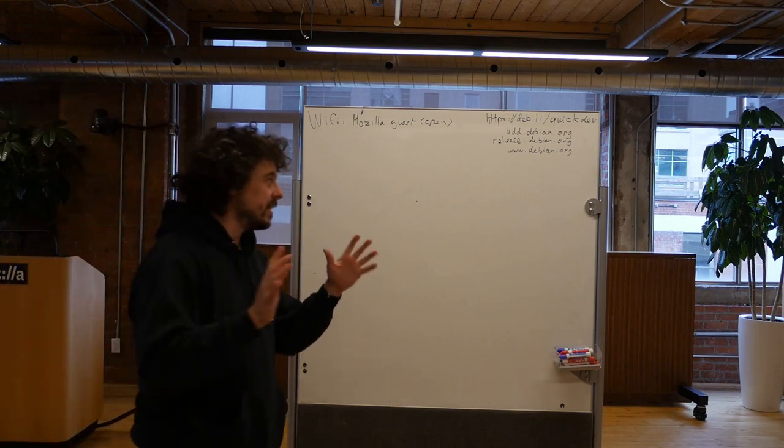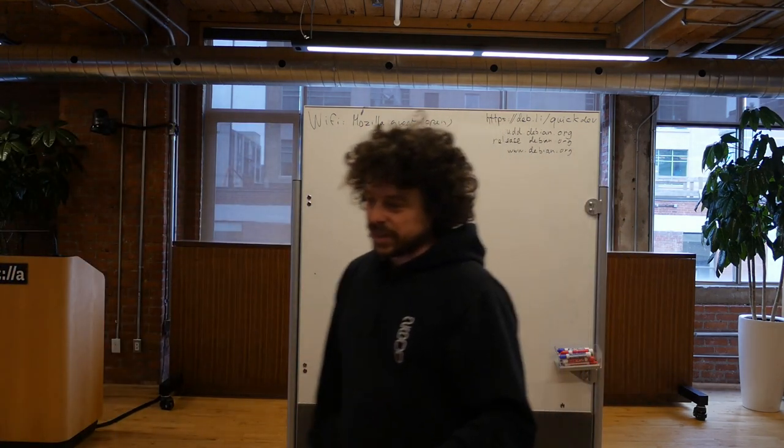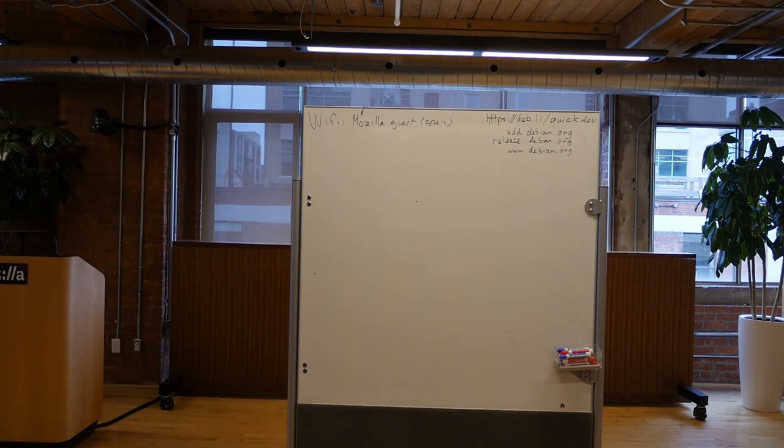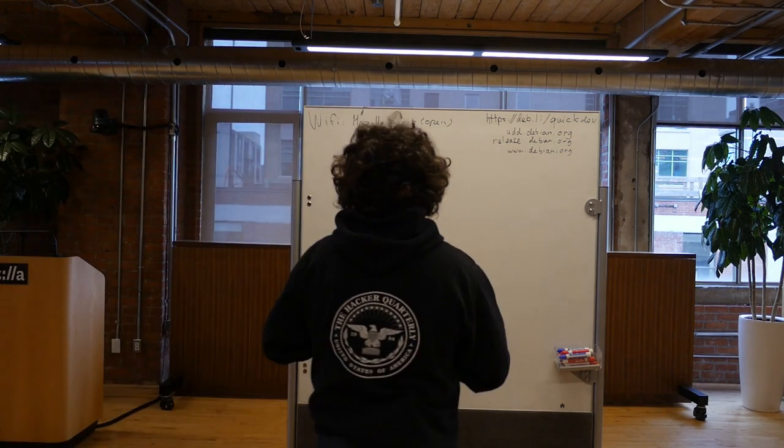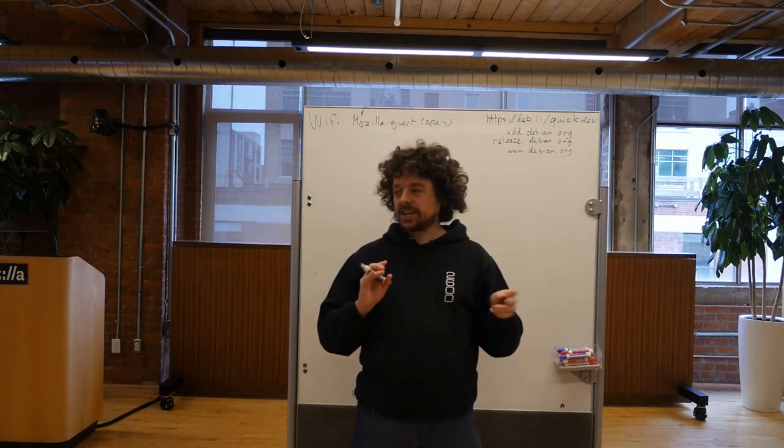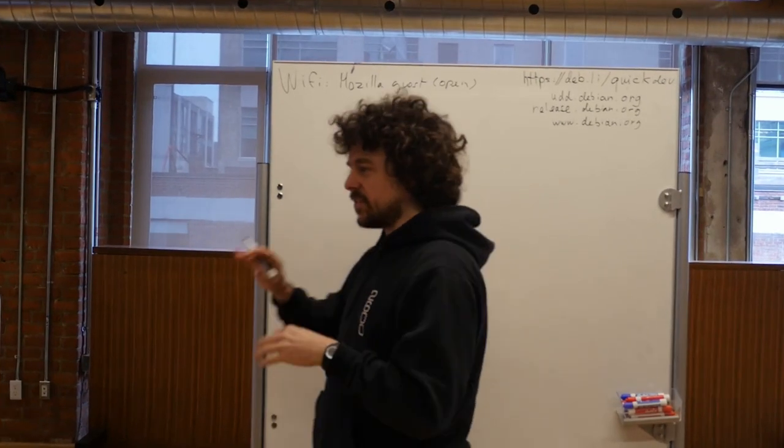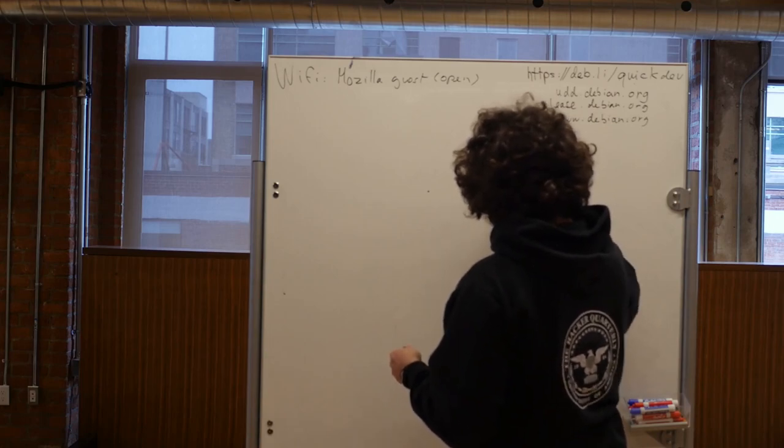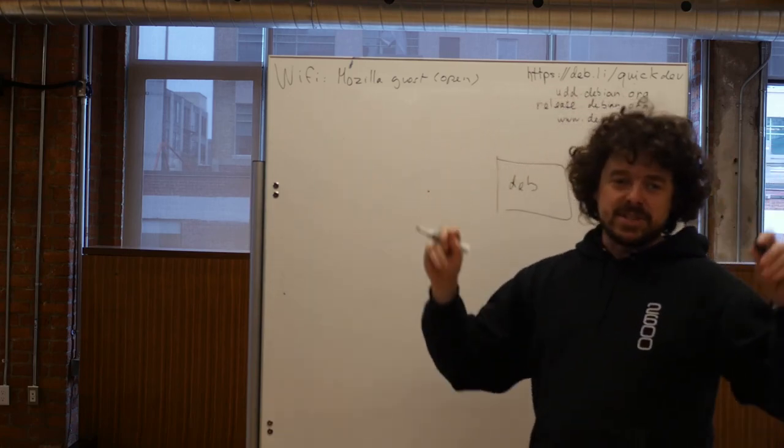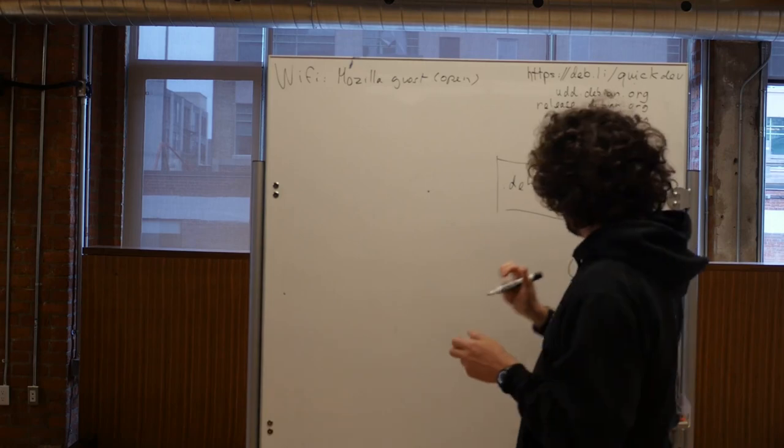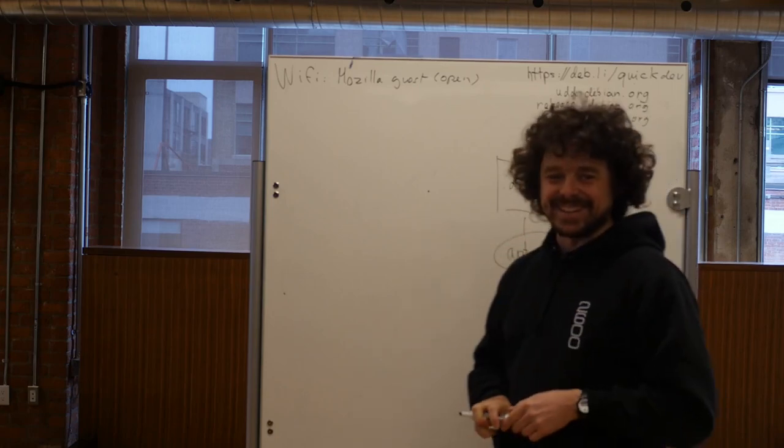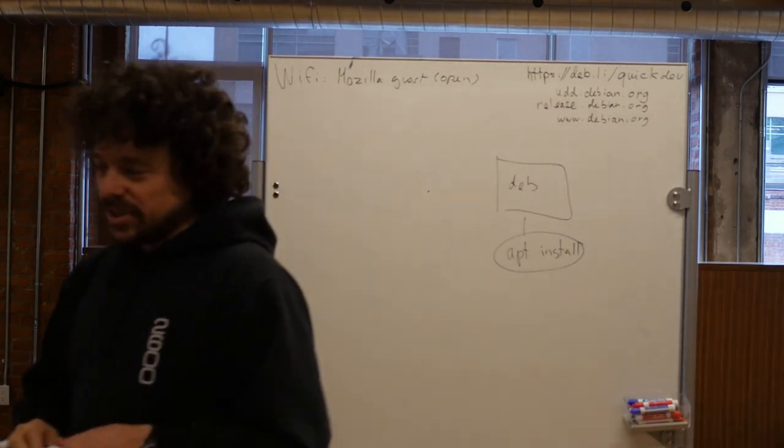So this is basically what I'm gonna go through. I'm gonna go through what is a Debian package and how do those tools interact with Debian packages. A Debian package is two things. There's a source package which is a little description file with the actual source and then there's a binary package which is the thing that gets installed when you apt-get install.